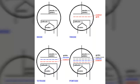After this, the pentode was developed. We can see here: diode, triode, tetrode, and pentode. The pentode has three grids, the tetrode has two grids, and the triode has one grid. So on the basis of grids, vacuum devices are of four types: diode, triode, tetrode, and pentode.